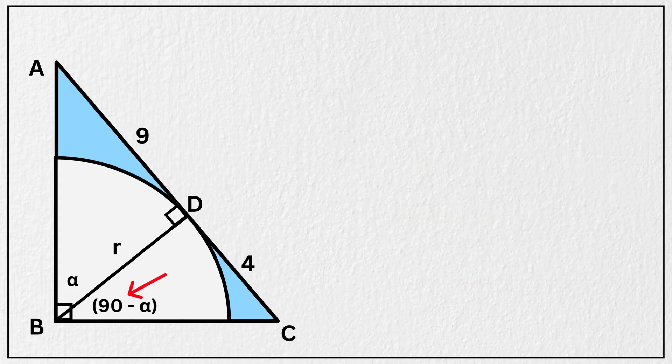Now look carefully. If this angle here is 90 minus alpha, then this angle must be alpha. And similarly, if this angle is alpha, then this remaining angle must be 90 minus alpha.